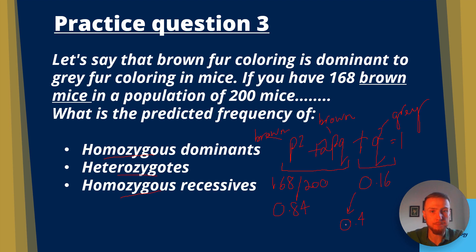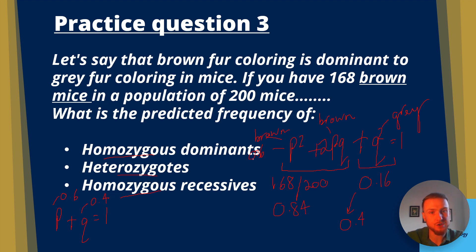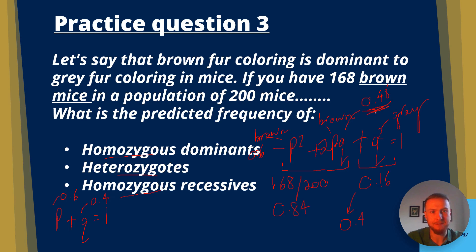Square rooting Q squared gives Q equals 0.4. Using P plus Q equals 1, P equals 0.6. P squared equals 0.6 squared equals 0.36, so 36% are homozygous dominant. For heterozygotes, we can either subtract: 0.84 minus 0.36 equals 0.48, or calculate directly: 2 times 0.6 times 0.4 equals 0.48. Both methods give 48% heterozygotes.